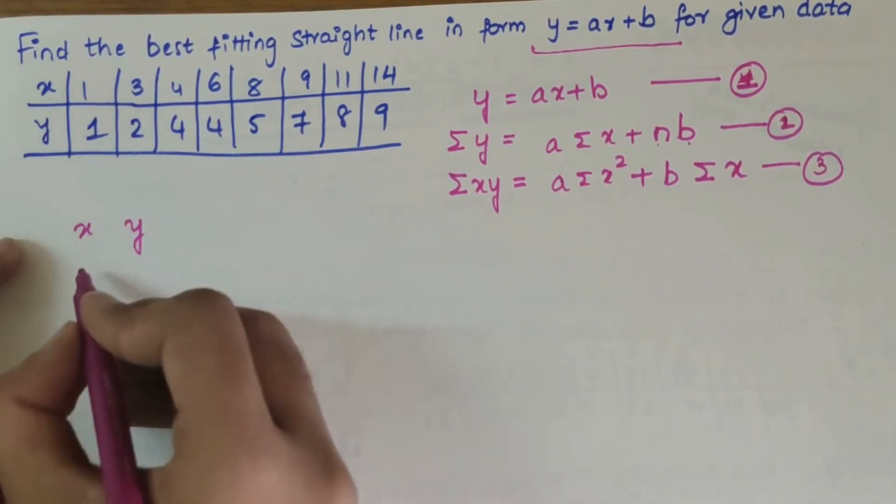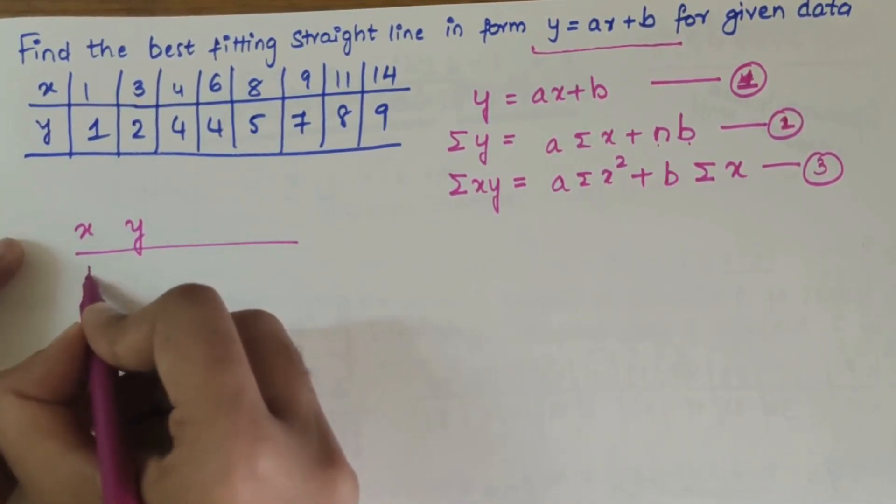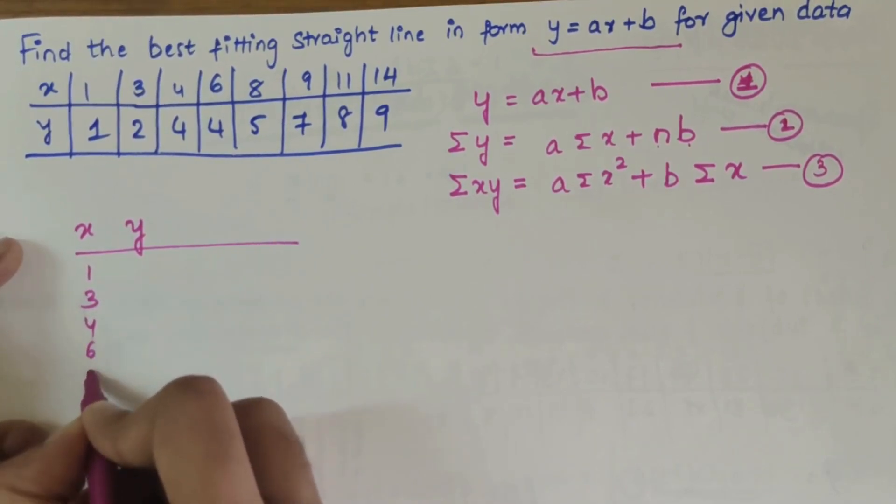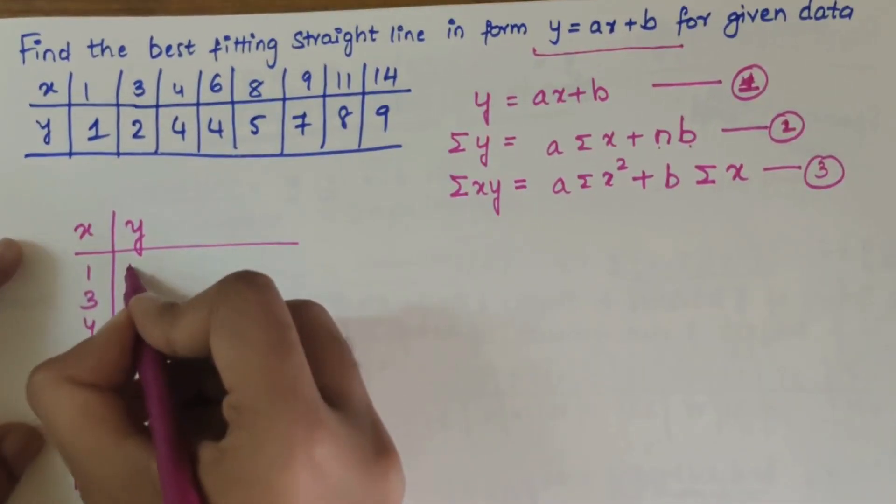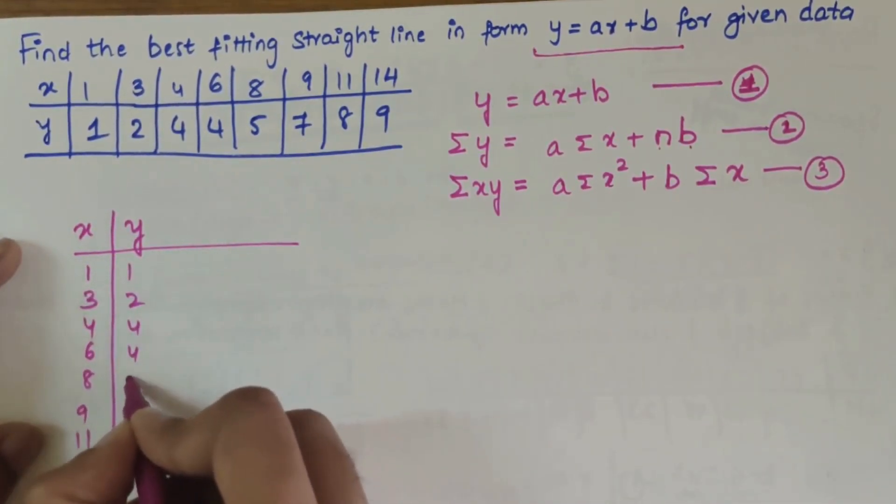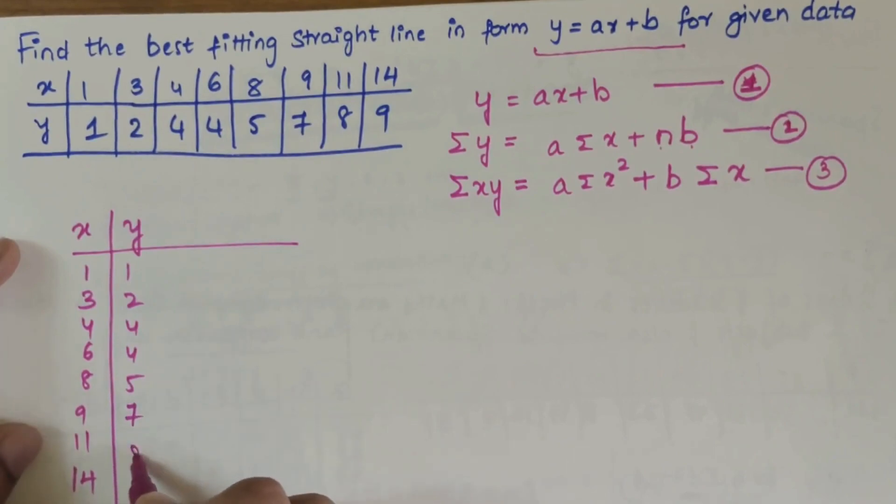Write down all the x and y values here. x values: 1, 3, 4, 6, 8, 9, 11, and 14. Similarly y values: 1, 2, 4, 4, 5, 7, 8, 9.